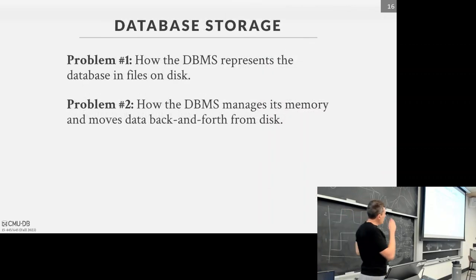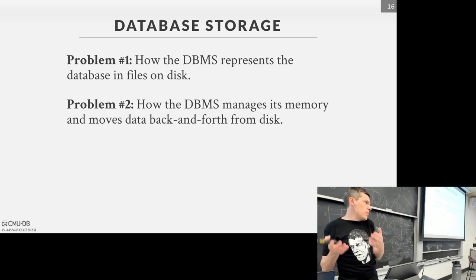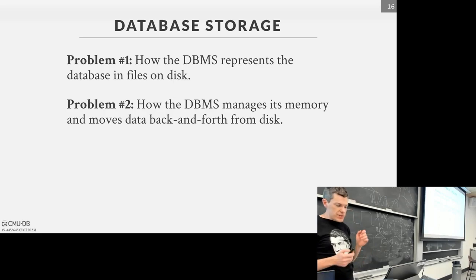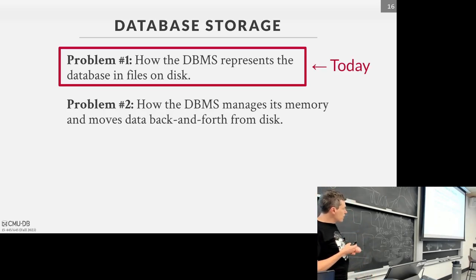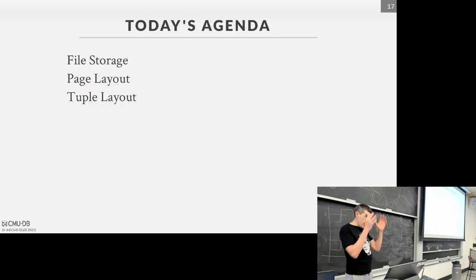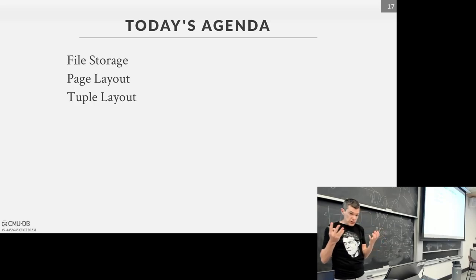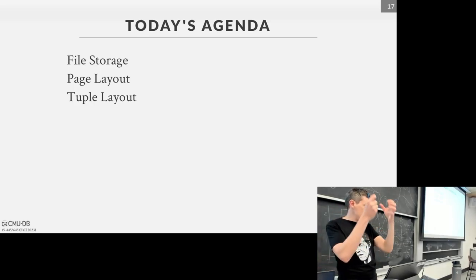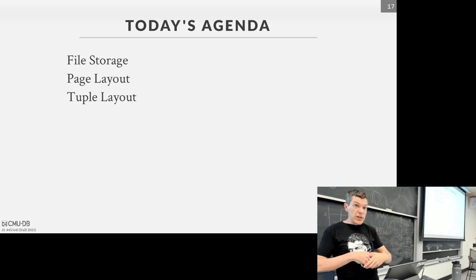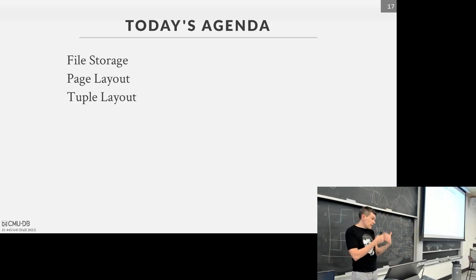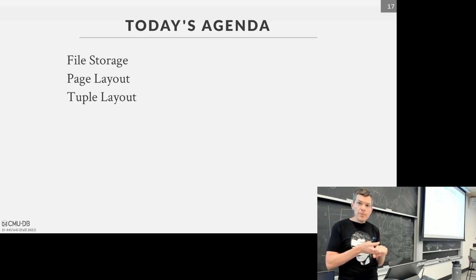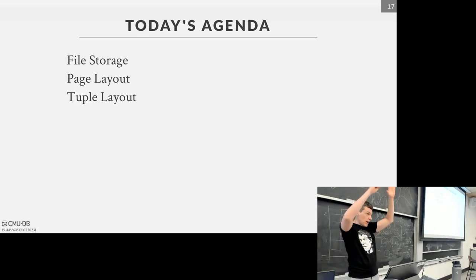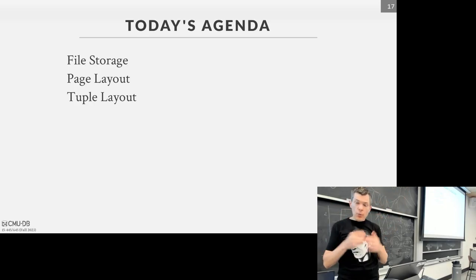For database storage there are two problems to deal with: how to represent the database in files on disk, and how to move data back and forth from disk into memory. Today's lecture covers the first problem; upcoming lectures cover the second. There are three layers: what do the files look like, what do the pages within a file look like, and what do the tuples within a page look like. We'll start at the top and go deeper.